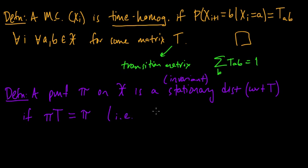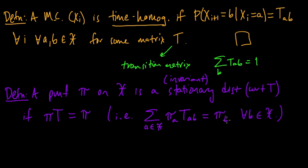In other words, when we sum over all values A of pi(A) times T_{AB}, we get back pi(B) for any B in the space X. This is using a more general notion of matrix multiplication, since it could be an infinite vector. If you know your linear algebra, this may remind you of an eigenvector equation. In fact, pi is called a left eigenvector of T, with eigenvalue 1.